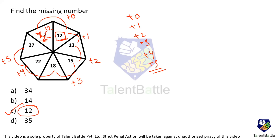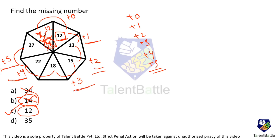Why not other options? If we take 14, going from 27 to 14 would mean minus 13, and from 14 with the fixed differences 1,2,3,4,5 it doesn't satisfy. Similarly, 34 or 35 would require a sudden jump of +7 or +8, which breaks the consistent +1,+2,+3,+4,+5 pattern. So the answer is option C.